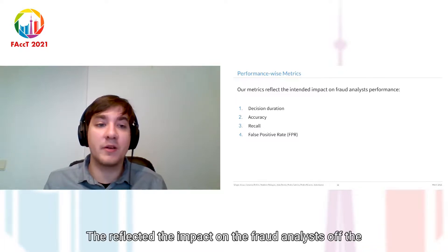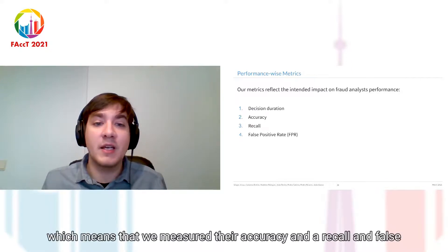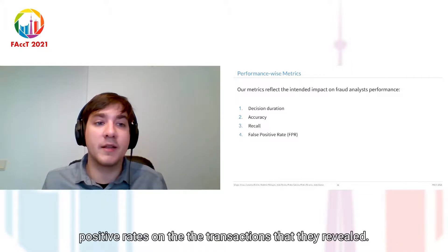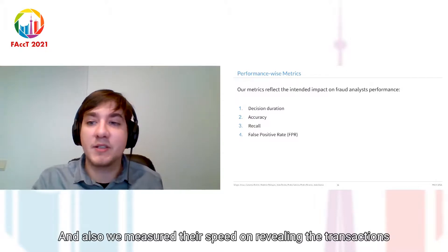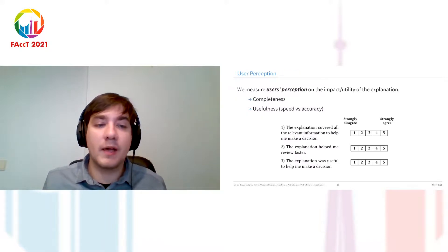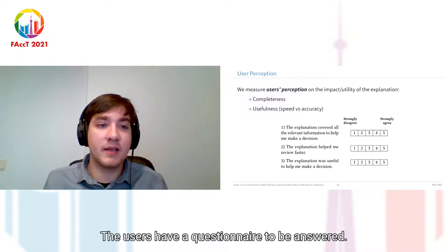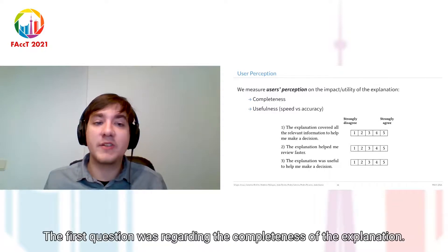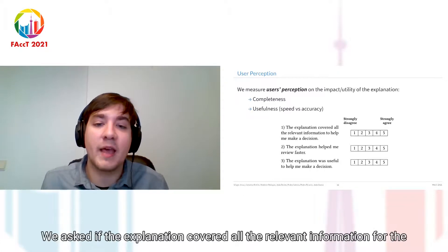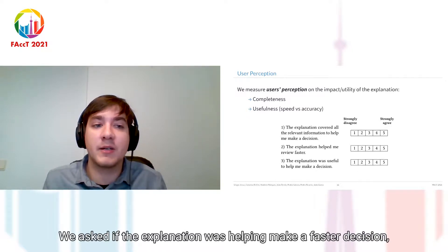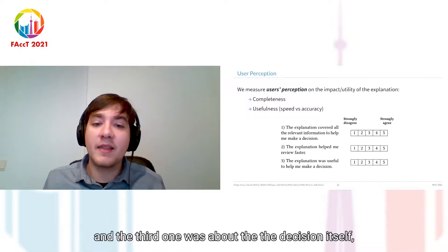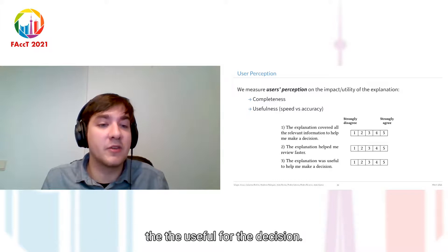The metrics we measured reflected the impact of explanations on the fraud analysts — we measured their accuracy, recall, and false positive rate on the transactions they reviewed, and also their speed when reviewing transactions. After each transaction with an explanation, users had a questionnaire to answer. The first question was about completeness: did the explanation cover all relevant information for the decision? The second was about usefulness in time: did the explanation help make a faster decision? And the third was about usefulness for the decision itself.